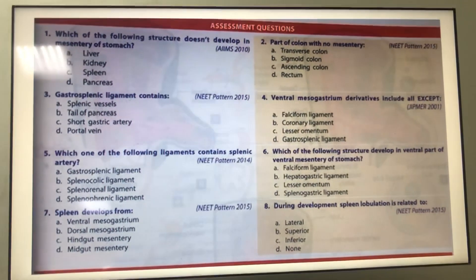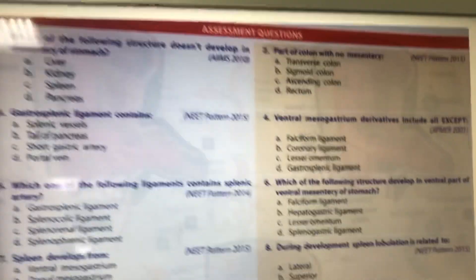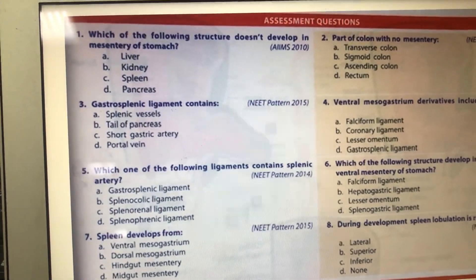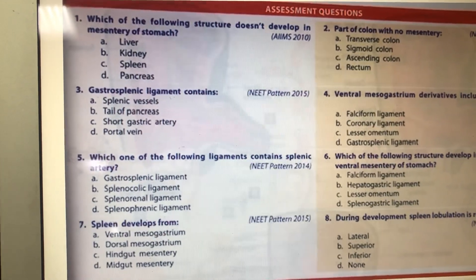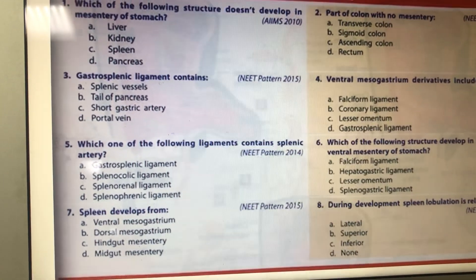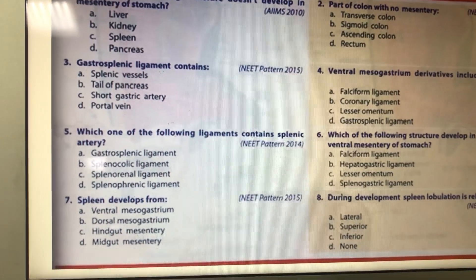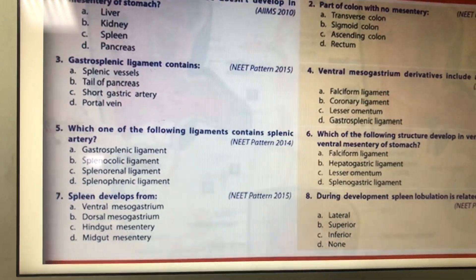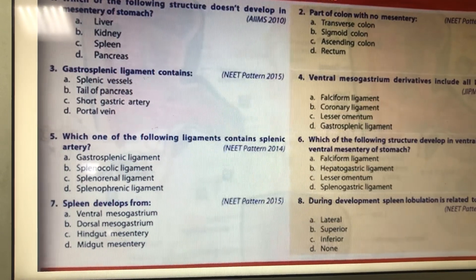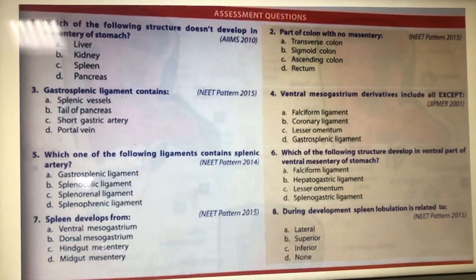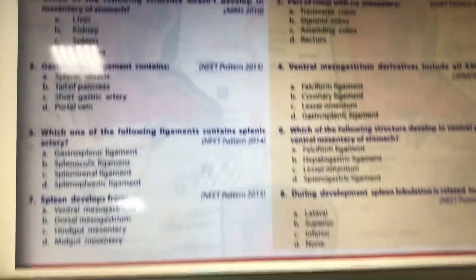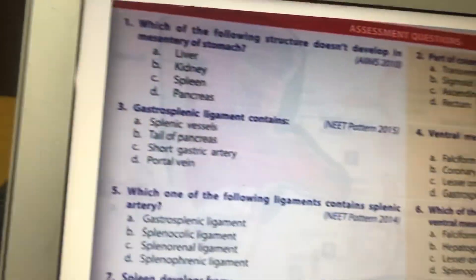MCQ: Which structure does not develop in the mesentery of the stomach? The liver develops in the ventral mesentery, the spleen in the dorsal mesentery, and the pancreas is a foregut derivative. The kidney is not associated with these mesenteries — so kidney is the correct answer.